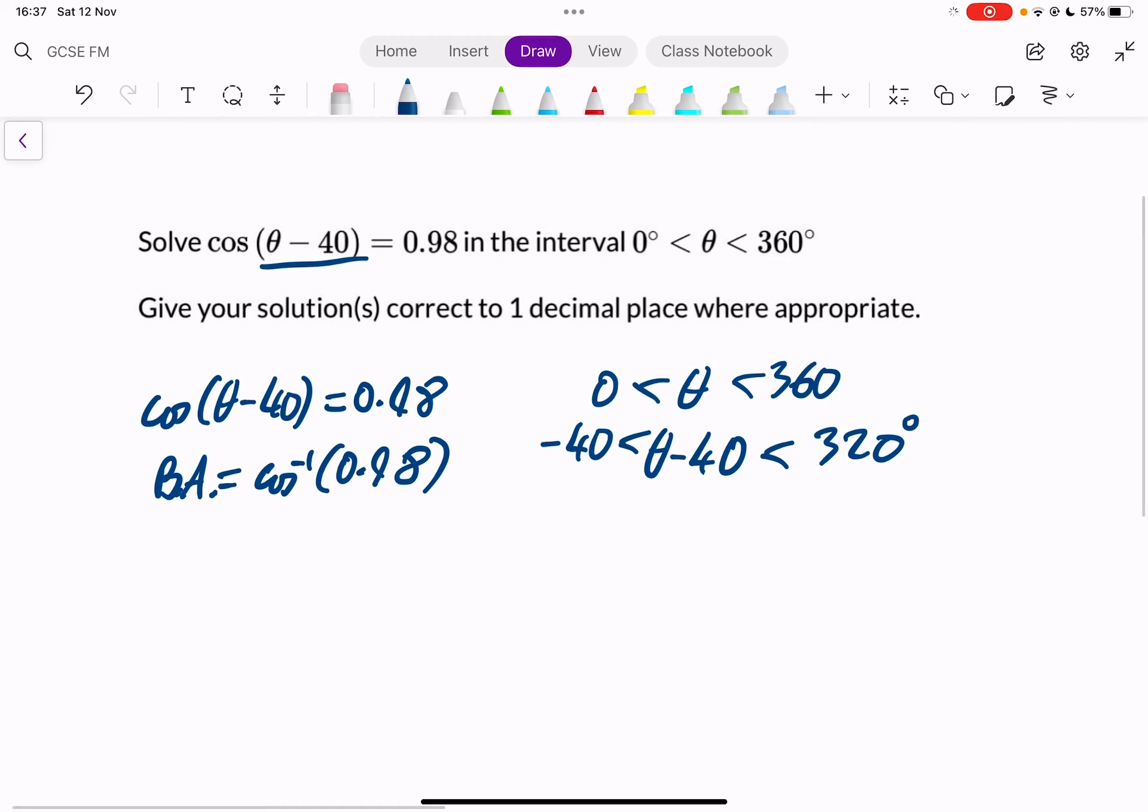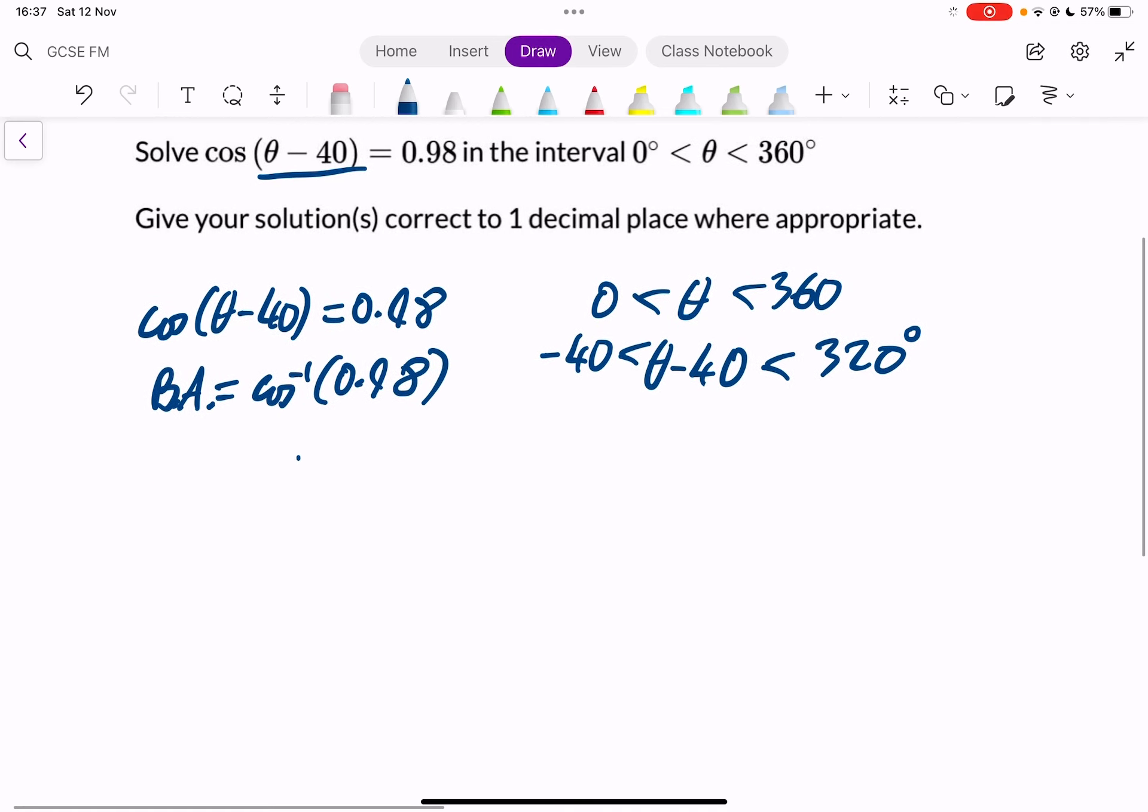So we'll now look at our CAST diagram. For your CAST diagram, just mark it on. The only thing I mark on is 0. That's C, A, S and T.